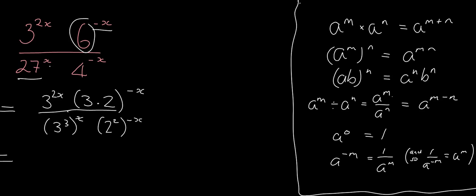Now I can use some rules to help me sort this out. So 3 to the 2x, nothing happens to that. Here, I'm going to apply for this bit here, I'm going to apply this rule. This negative x, the power applies to both the things inside the bracket. So it's 3 to the negative x, 2 to the negative x. That doesn't look very neat, let me just rewrite it. And then at the bottom, I am going to be using this rule here. So it is 3 to the 3 times x, so it's 3 to the 3x. And it's 2 to the 2 times negative x, so it's negative 2x.